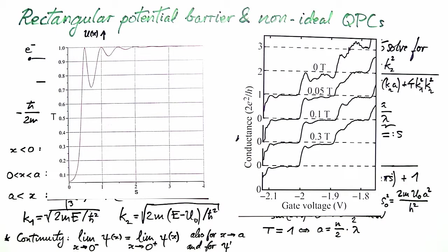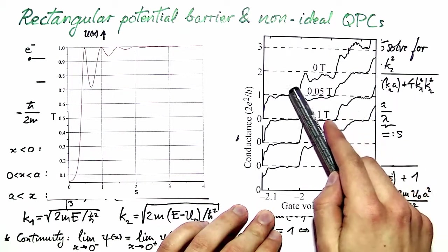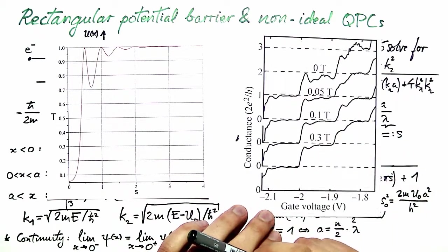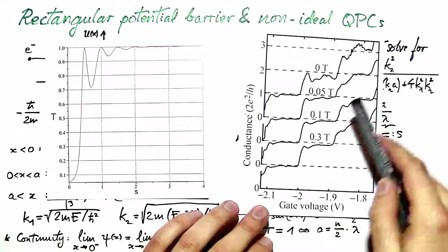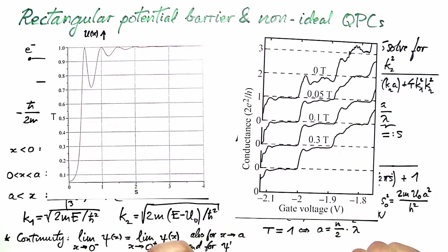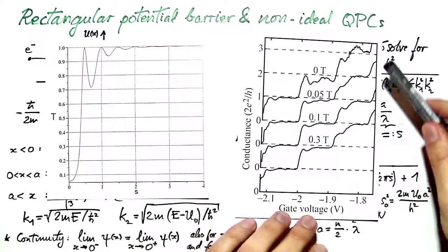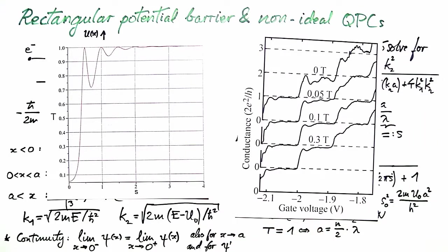Two further remarks can be made about the non-ideal point contact. We observe that magnetic field suppresses those deviations from perfect conductance, which is linked to a suppression of backscattering by magnetic field. Furthermore, on the higher plateaus, we see that the conductance exceeds the quantized value. This indicates mode mixing. In fact, higher modes contribute to conductance, increasing its value beyond what is expected at this plateau.